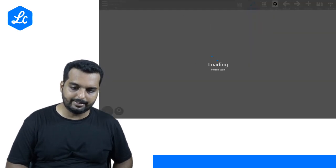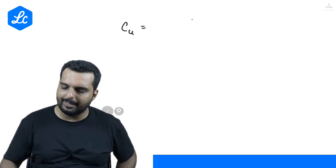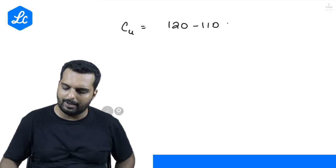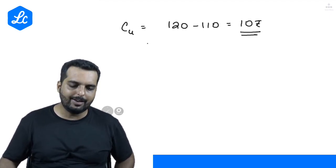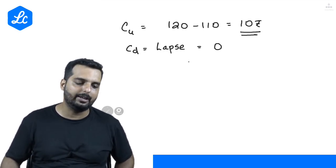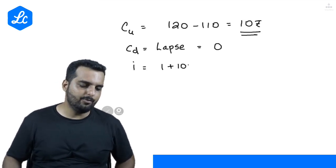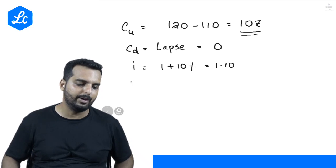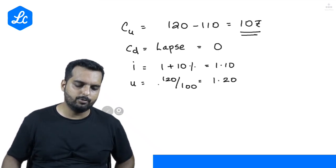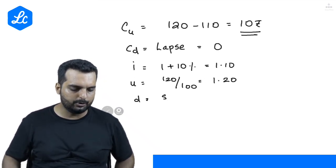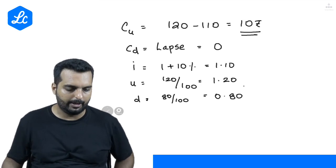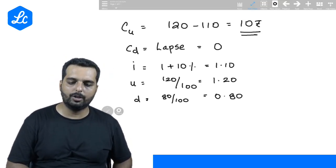Cu as I told you is nothing but call up. Call up means what is the price that you will get if the price goes up. It is 120 minus we have an exercise price of 110. So if the price goes up, I will exercise. I will get 10. Call down, I will be lapsing the option if the price comes down to 80 and Cd will be 0. So i will be 1 plus 10 percentage which is nothing but 1.1. U is the proportion of the up price that is 120 divided by 100, I will call it as 1.2. Similarly, D is the proportion of the down price that is 80 divided by 100 which is equal to 0.80. I think we have got all the things over here. Now, let us put the formula once again.